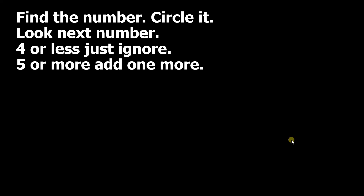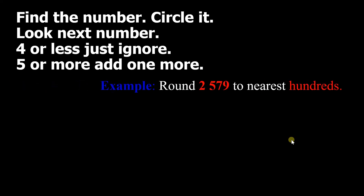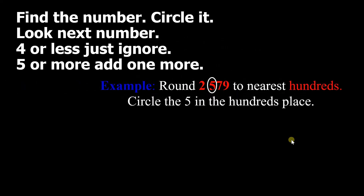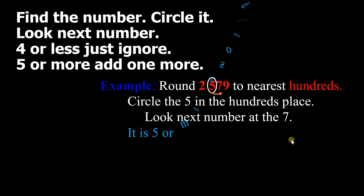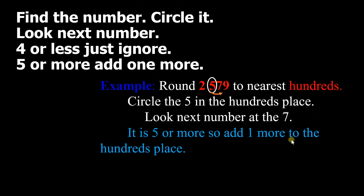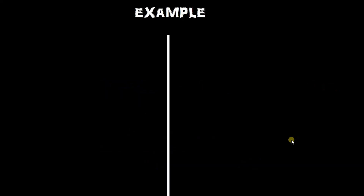Kung 5 or more, add 1 more. Kalimbawa kung ang kasunod nya ay 5 and above, i-dadagdag natin ng isa dun sa may circle na number. Example: round 2,579 to the nearest 100. Circle 5 in the 100 place. Yung kasunod ay 7 — mas mataas siya sa 5, ibig sabihin 5 or more, so add 1 more to the 100 place. Magiging 6 — kaya yung 2,579 pag nireround natin magiging 2,600.